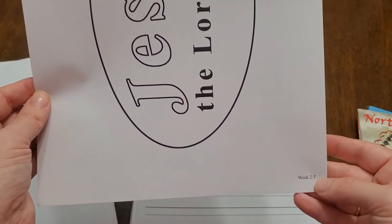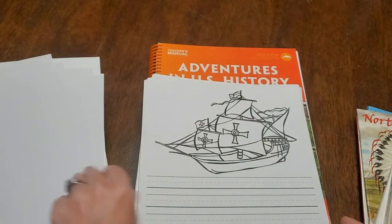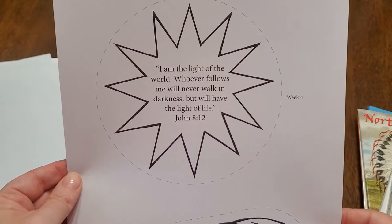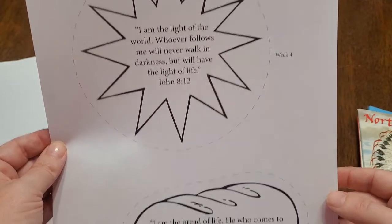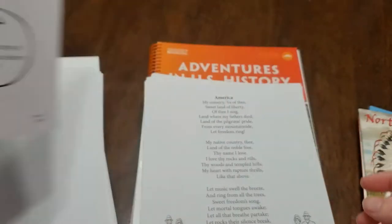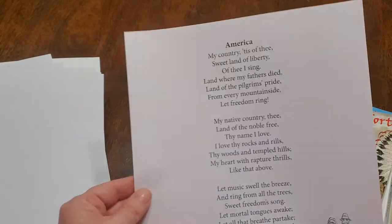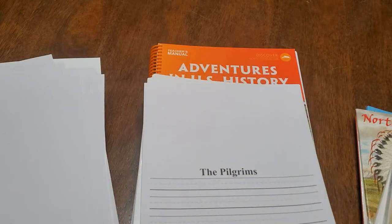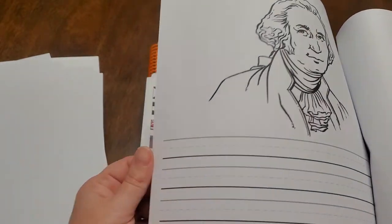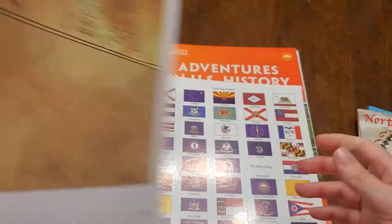Then we get into week two on Tuesday. Here it tells you the Bible verse you're working on for week four, and for week six — Tuesday, week four, week six. And then wording to America, some more copy sheets, Poor Richard's Almanac you're going to learn about, the Declaration of Independence. Just lots of coloring and writing — lots of fun hands-on things to do.